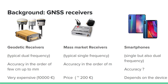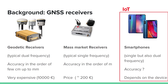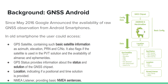GNSS receivers can be divided into three categories. Geodetic receivers, used at permanent stations, are very expensive, multi-constellation, and multi-frequency, but too large for IoT. Mass market GNSS receivers are quite small, typically single-frequency, and cost around 200 euros, but have limited computational power. In recent years, smartphones can also be used as GNSS receivers. In my opinion, the most suitable receivers for IoT applications are smartphones. Starting from May 2016, Google announced the availability of raw measurements from smartphones.